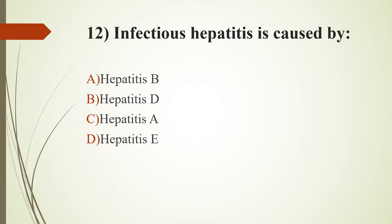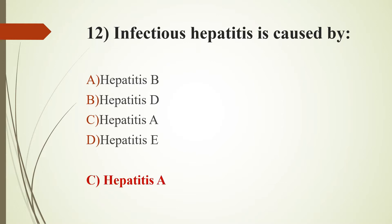Twelfth question: Infectious hepatitis is caused by which option? Option A, Hepatitis B. Option B, Hepatitis D. Option C, Hepatitis A. Option D, Hepatitis E. The answer is Option C, Hepatitis A. Infectious hepatitis is inflammation of the liver caused by Hepatitis A. Hepatitis B causes serum hepatitis. Hepatitis C mainly causes post-transfusion hepatitis. Hepatitis D is called the delta agent. Hepatitis E is enterically transmitted hepatitis.